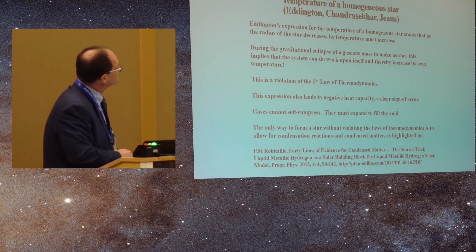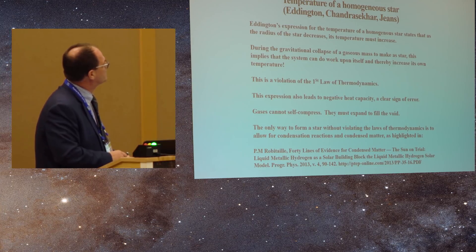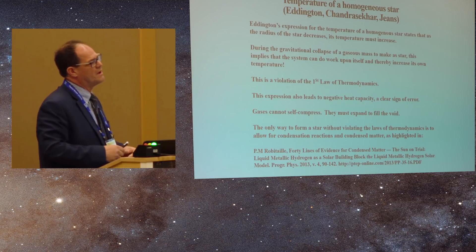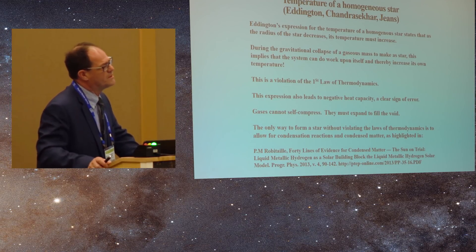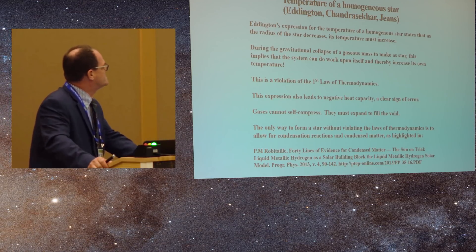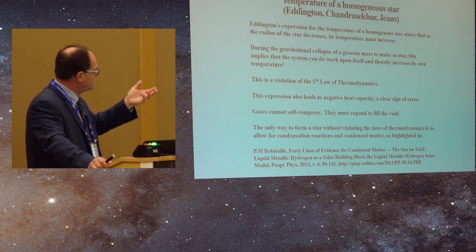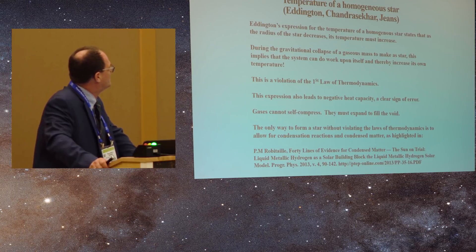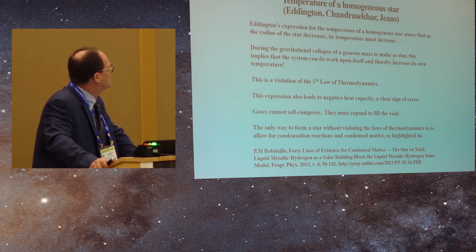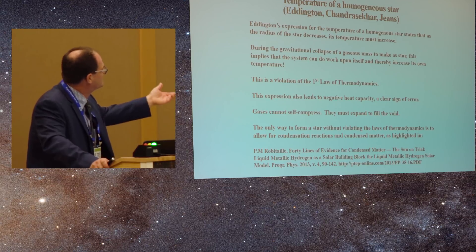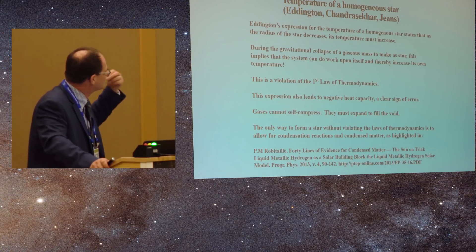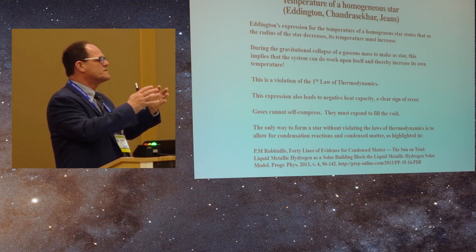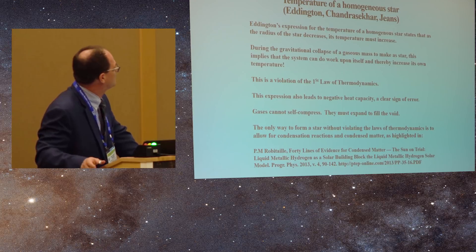So Eddington's expression for the temperature of a homogeneous star states that as the radius of the star decreases, its temperature must increase. And that actually comes from Lane's law. Lane proposed this in 1870. When Lane wrote the paper, he didn't realize actually that this is the conclusion that he had come to. Someone else later on called it Lane's law because you could extract it from Lane's paper. So as the star's radius decreases, its temperature goes up. That's Lane's law.